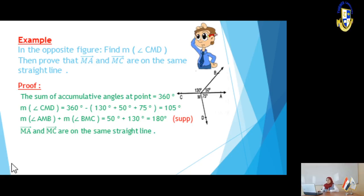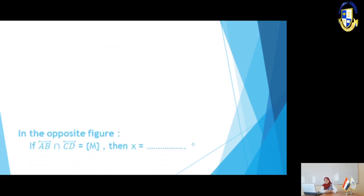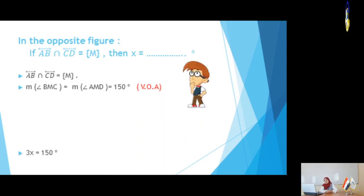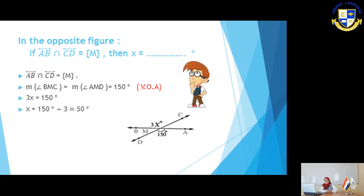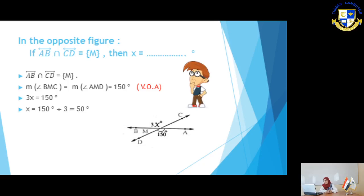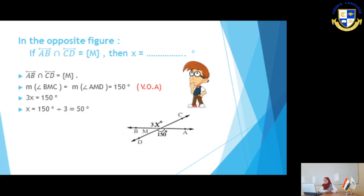Let's move to slide number 7 — another example. In the opposite figure, if AB straight line intersects CD straight line at point M, find the value of X. Since two straight lines intersect at a point, each pair of vertically opposite angles are equal. So measure of angle BMC equals measure of angle AMD equals 150 degrees, because they are vertically opposite angles. Angle BMC is represented by 3X, so 3X equals 150.